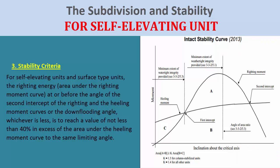Three: stability criteria for self-elevating units and surface-type units. The righting energy — the area under the righting moment curve at or before the angle of the second intercept of the righting and the heeling moment curves, or the downflooding angle, whichever is less — is to reach a value of not less than 40% in excess of the area under the heeling moment curve to the same limiting angle.